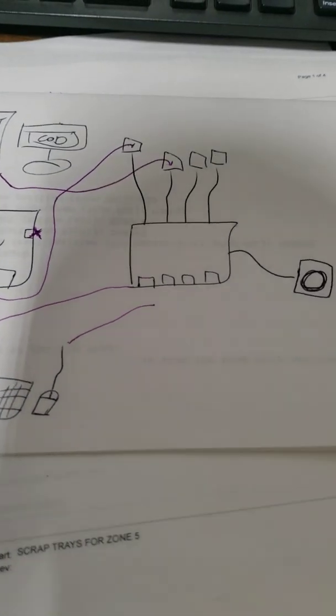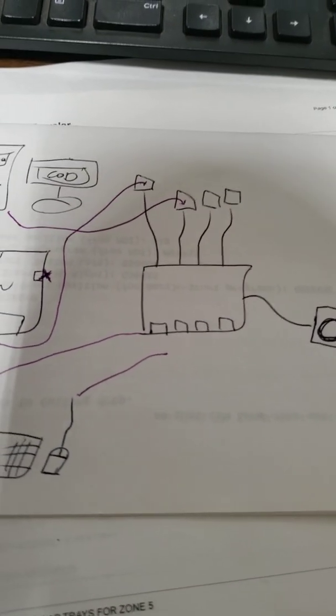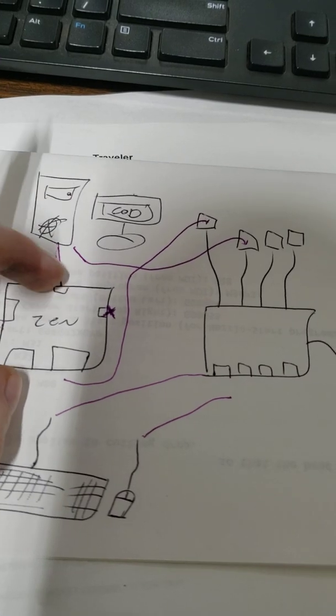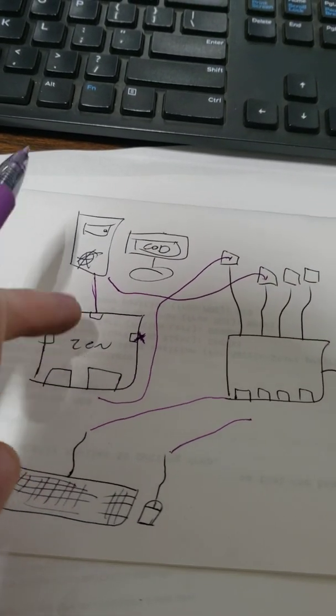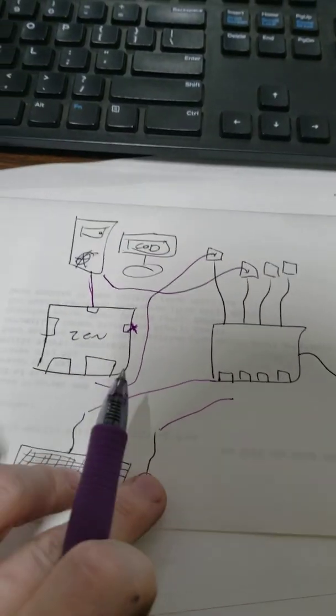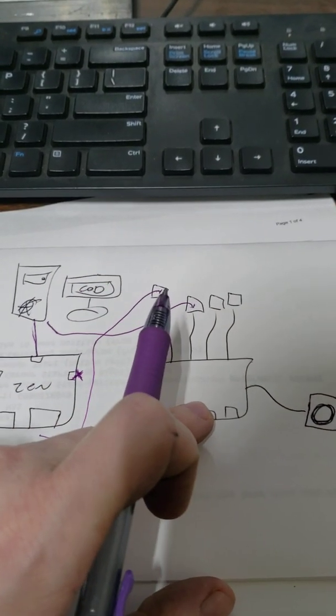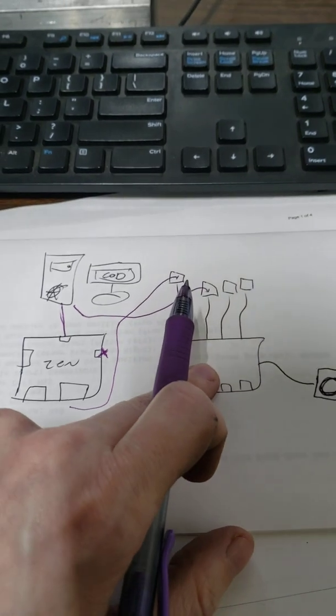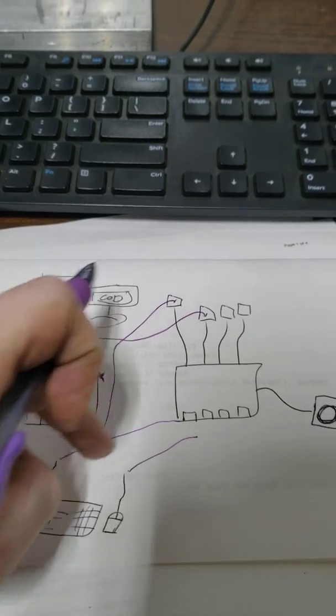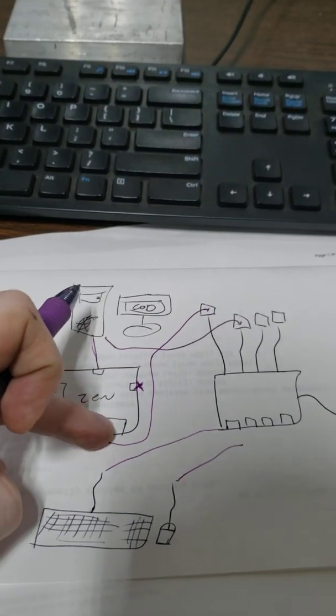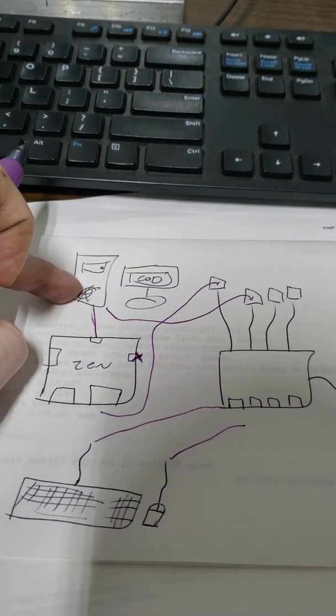So now what you have going on is your Zen is connected to your PC through the micro USB in the back. This tells your PC that hey, this is the controller that I'm using. And then you take your mouse and keyboard, plug it into the USB switch. The USB switch then connects your mouse and keyboard to the Zen. So mouse and keyboard go into the switch, out the switch into the Zen, into the PC, and the PC thinks it's a controller.